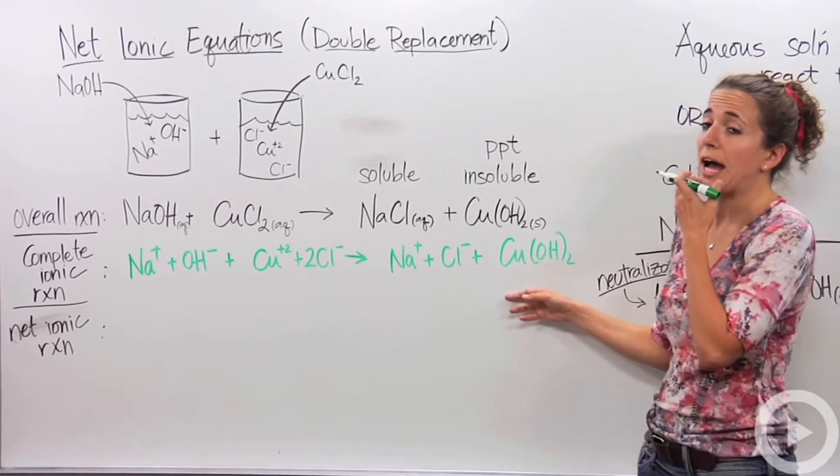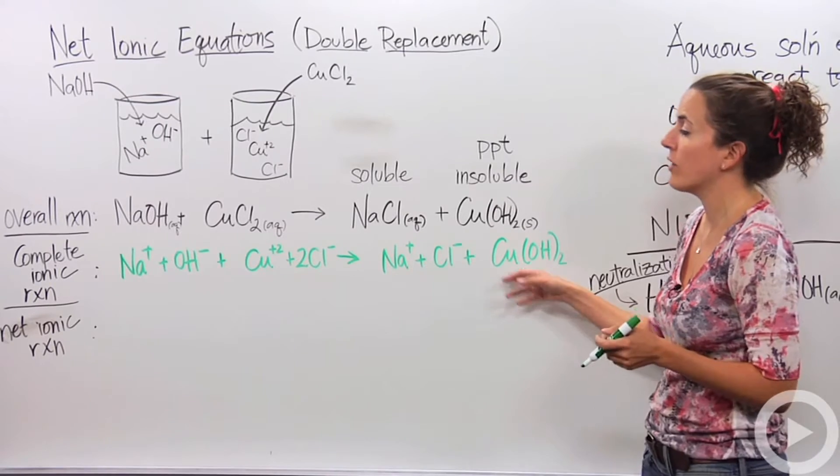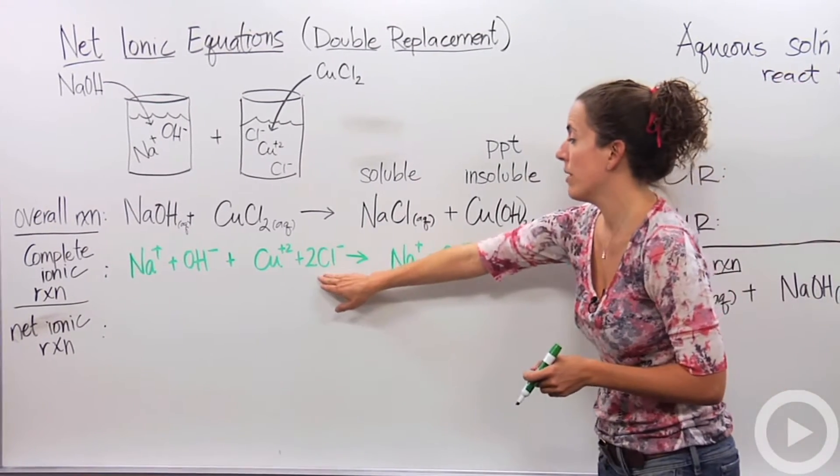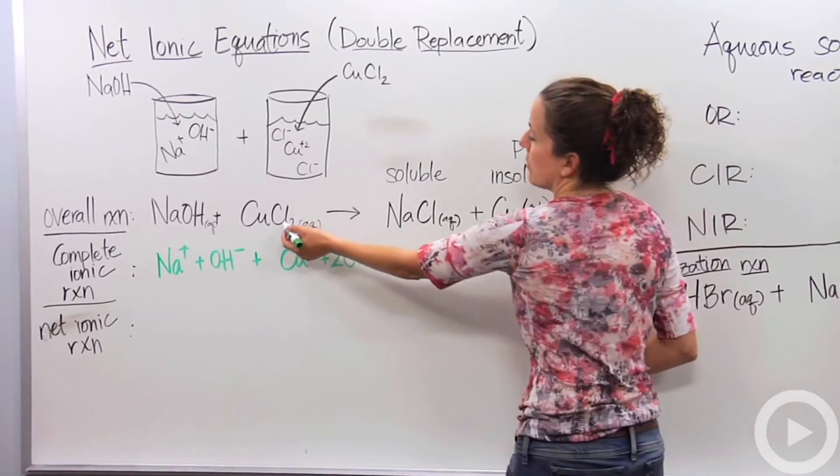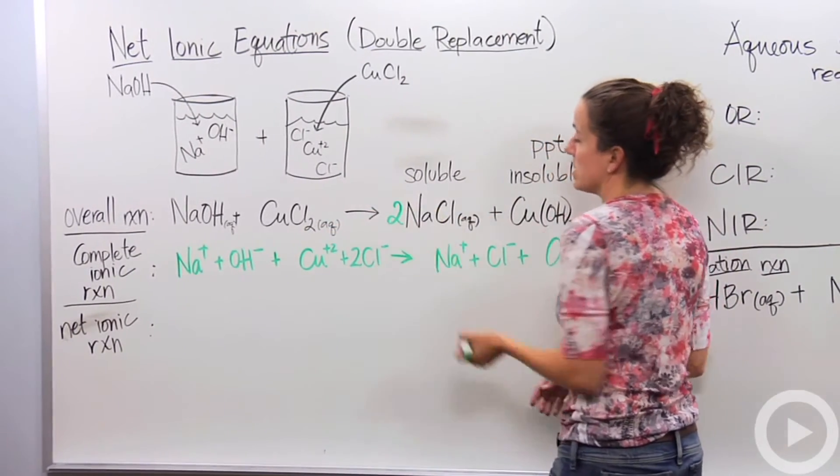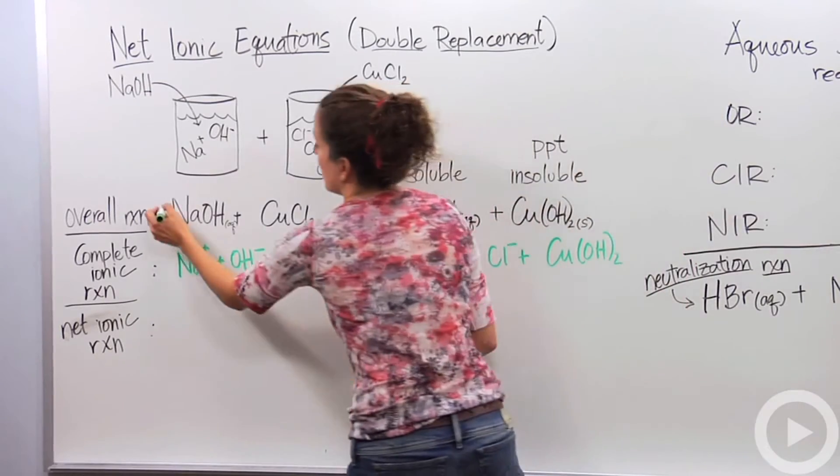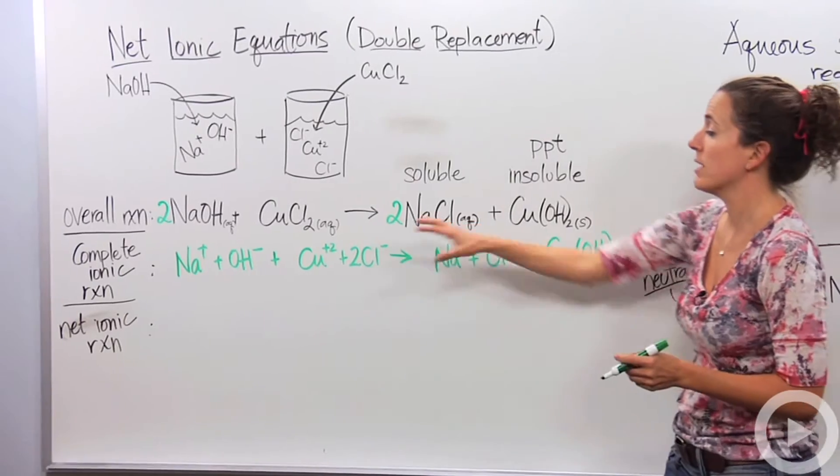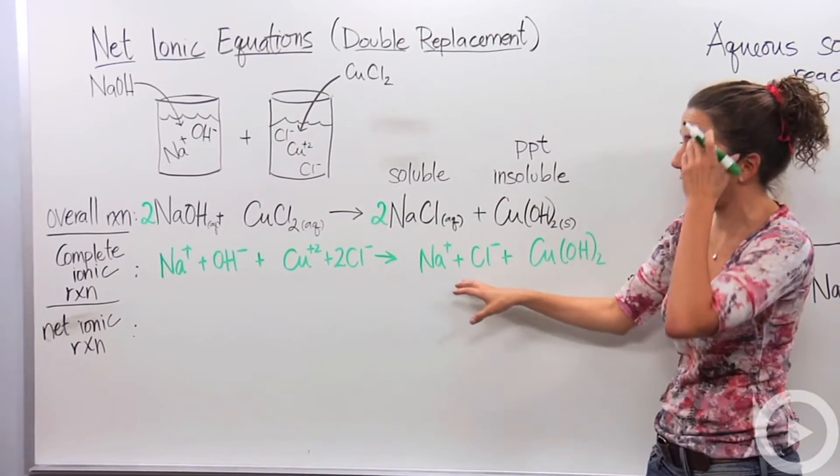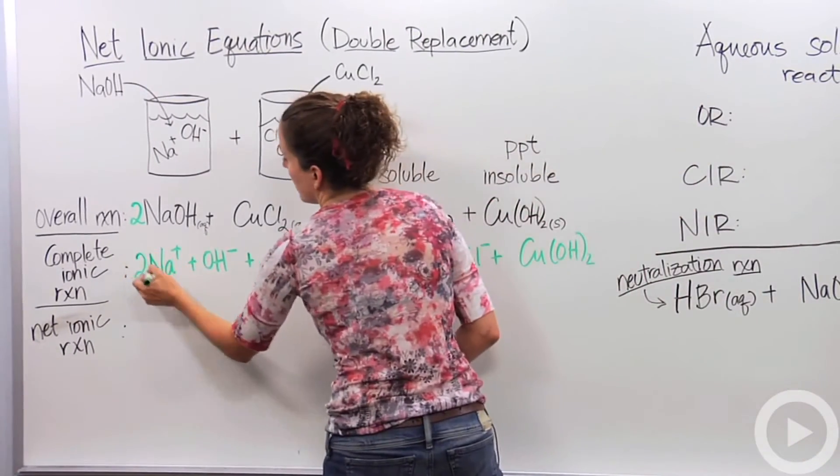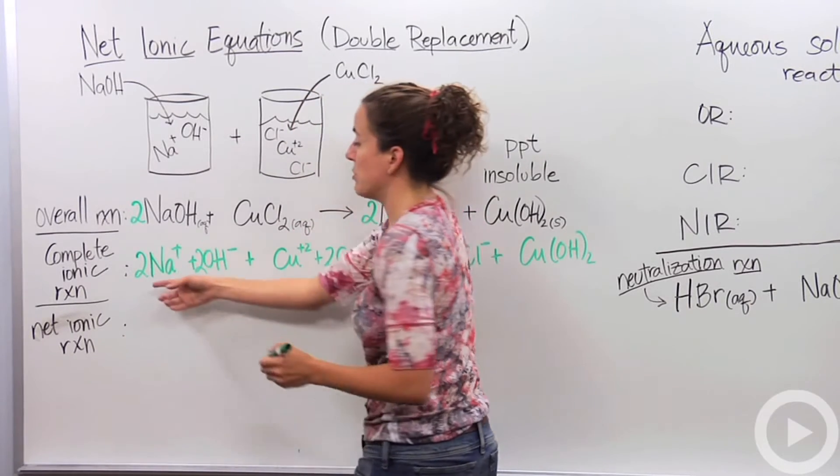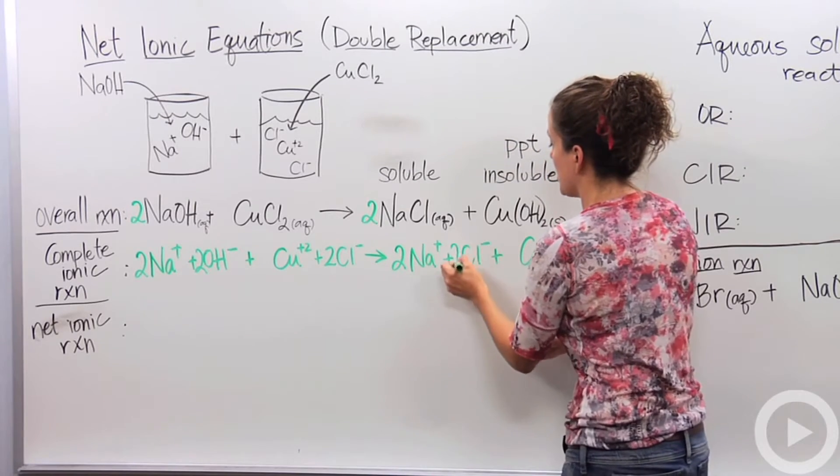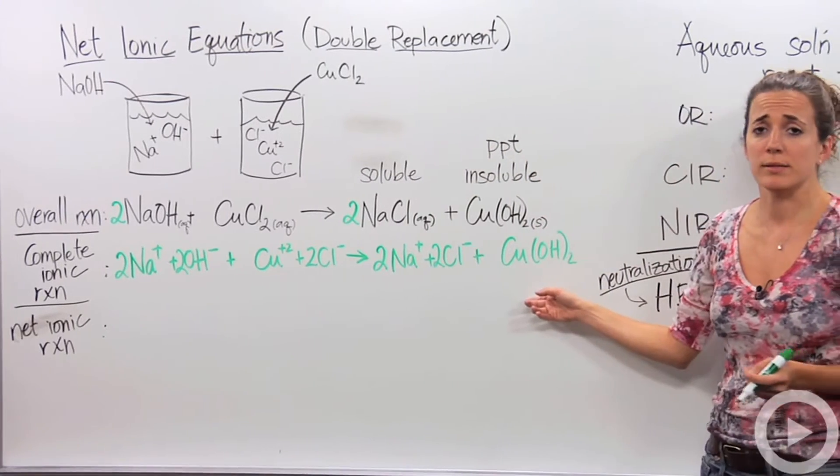Actually, I forgot to balance the original equation so we're going to have to go back and make sure this is balanced. There's two chlorines, there needs to be two chlorines here, which means I have two sodiums, two sodiums there, two hydroxides, two hydroxides. This is balanced. This will also change our complete ionic equation. We'll have to put a two here. We have two of these guys, both of them. This two will tell me I have two of these and two of these. So now it's balanced.